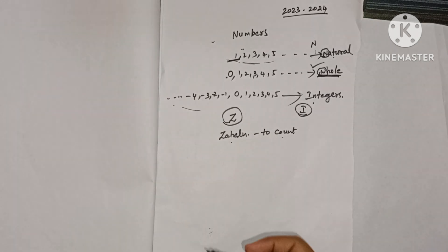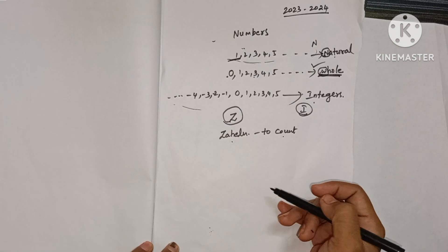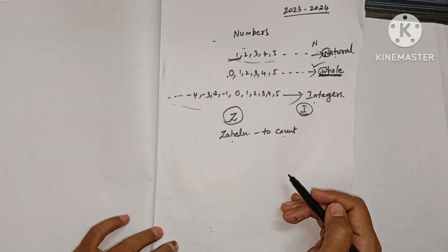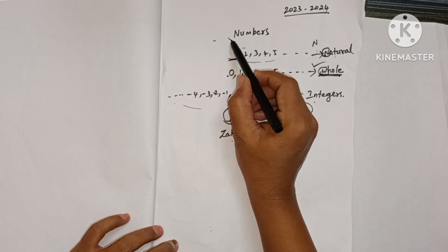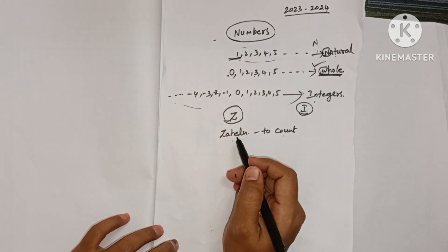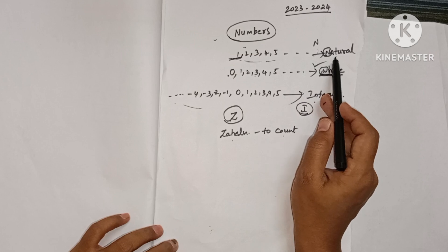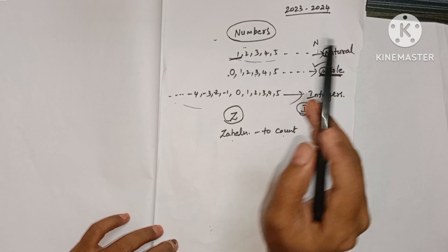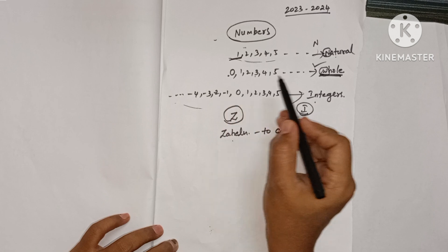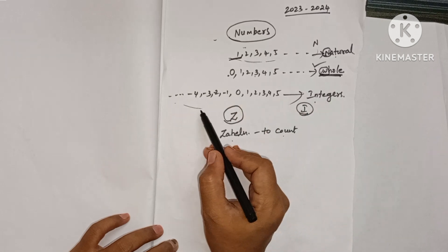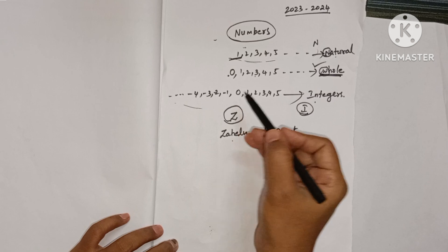So maths is all about numbers. Counting numbers are called natural numbers; if zero is added to those, they are whole numbers; if negative numbers are added to the whole numbers, those are integers.